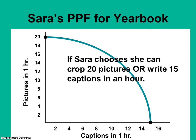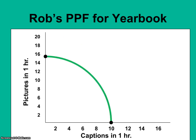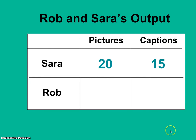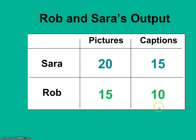So again, Sarah can either crop 20 pictures or write 15 captions in that hour of time. Rob is also working on the yearbook. Rob isn't quite as productive as Sarah, but Rob can either crop 15 pictures or write 10 captions in an hour of time. To summarize this data on a table: Sarah can either crop 20 pictures or write 15 captions, and Rob can either crop 15 pictures or write 10 captions.